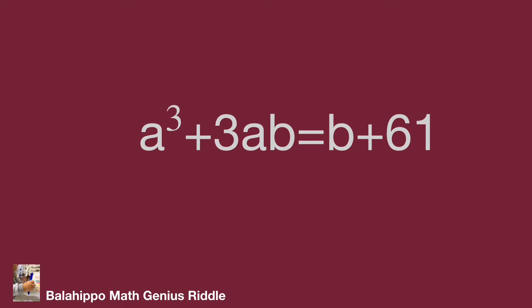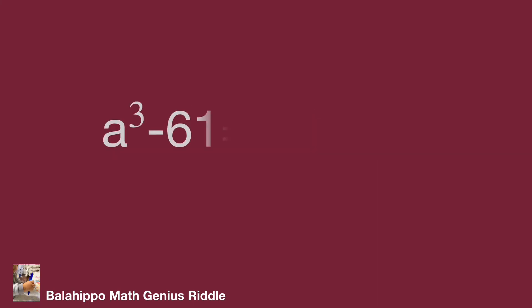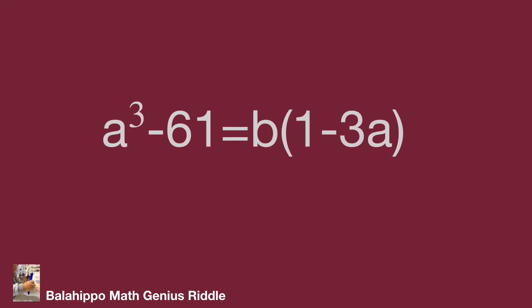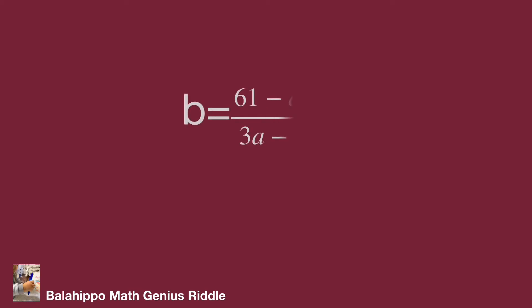Next, I'm going to isolate b. Move 3ab to the right side and 61 to the left side of the equation. Then we have a cubed minus 61 equals b minus 3ab. Factor out b on the right side: b times (1 minus 3a). Divide both sides by (1 minus 3a). Multiply numerator and denominator by minus 1, then adjust b to the left side. The equation becomes b equals (61 minus a cubed) over (3a minus 1).